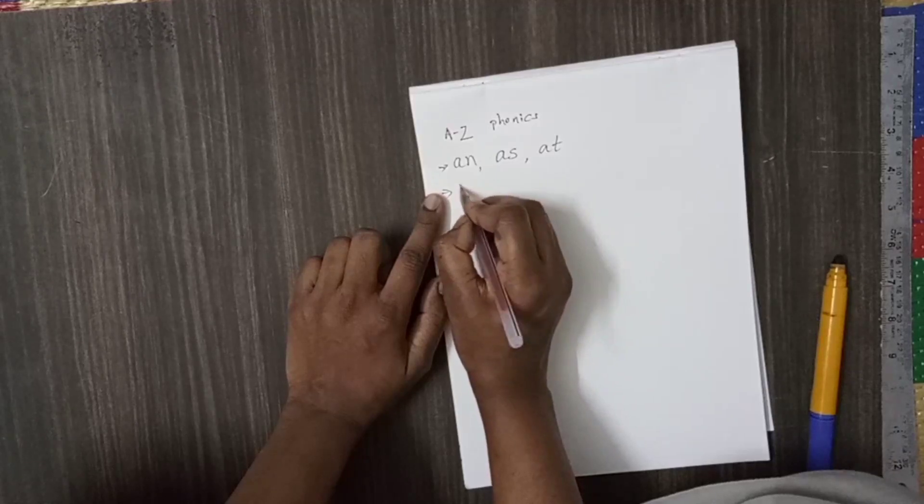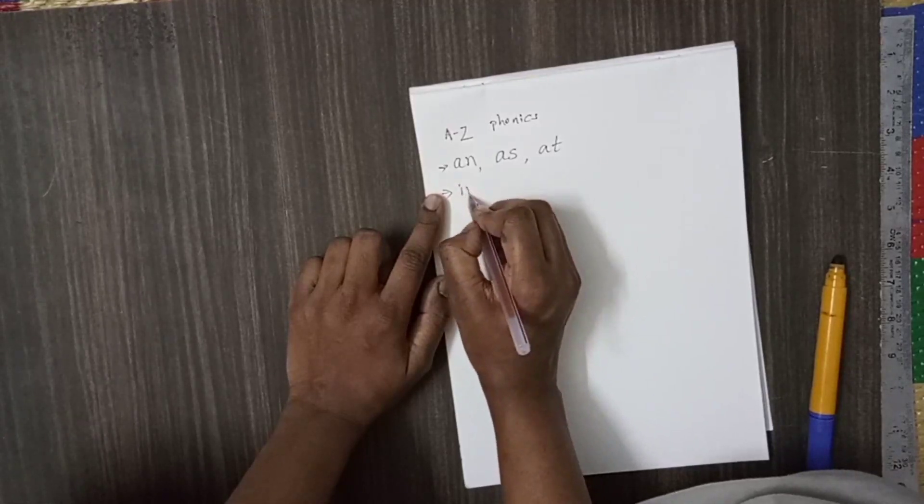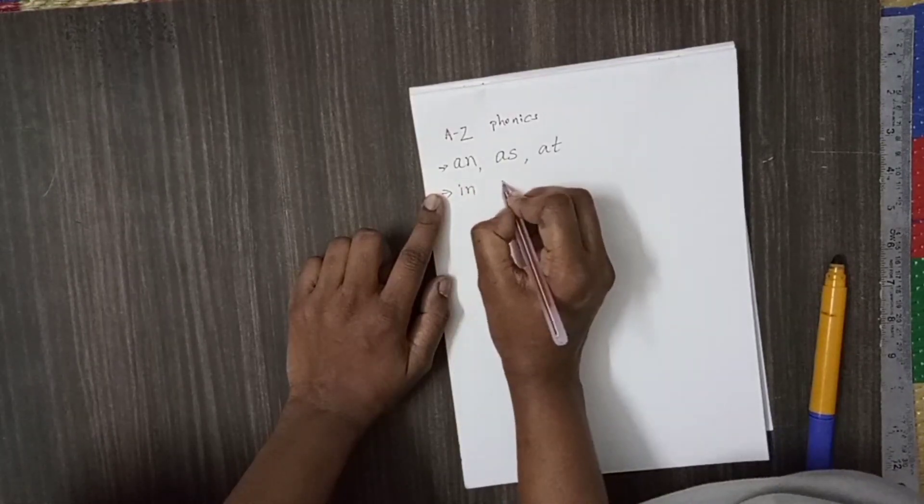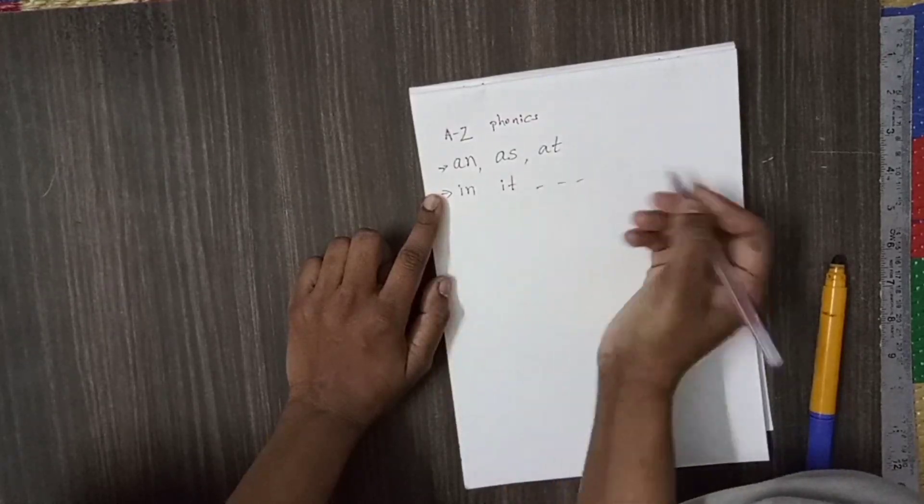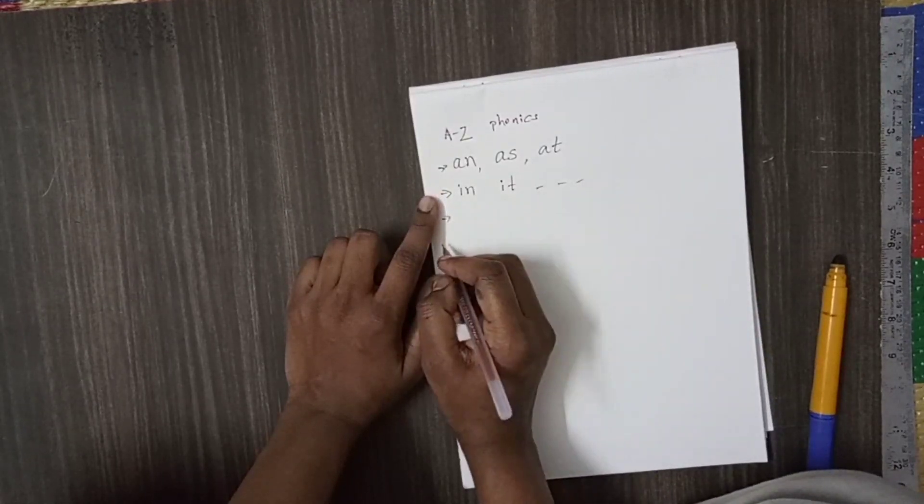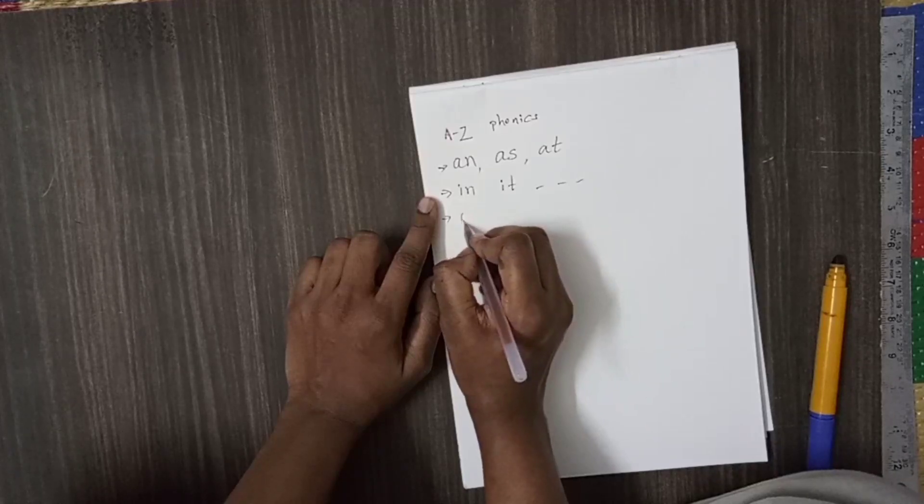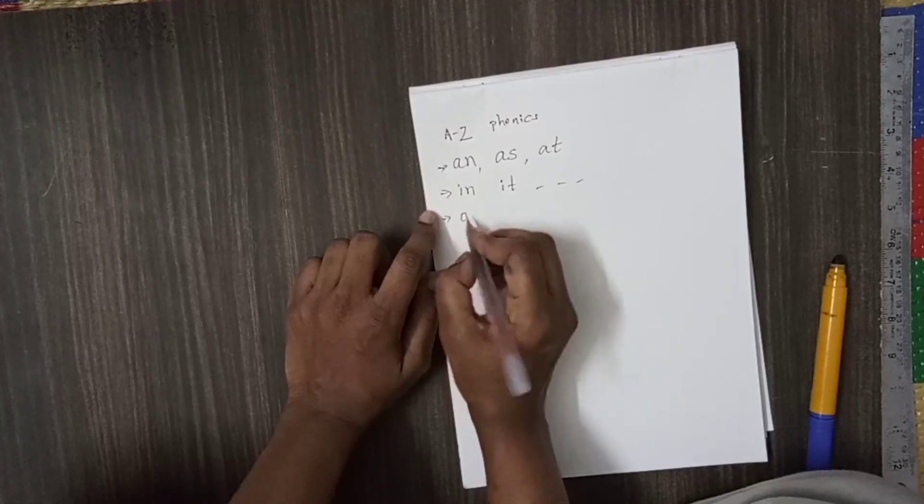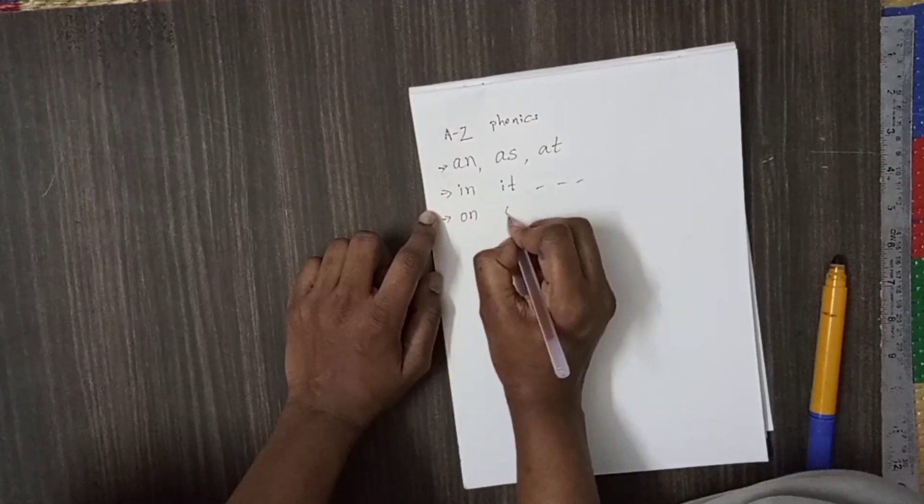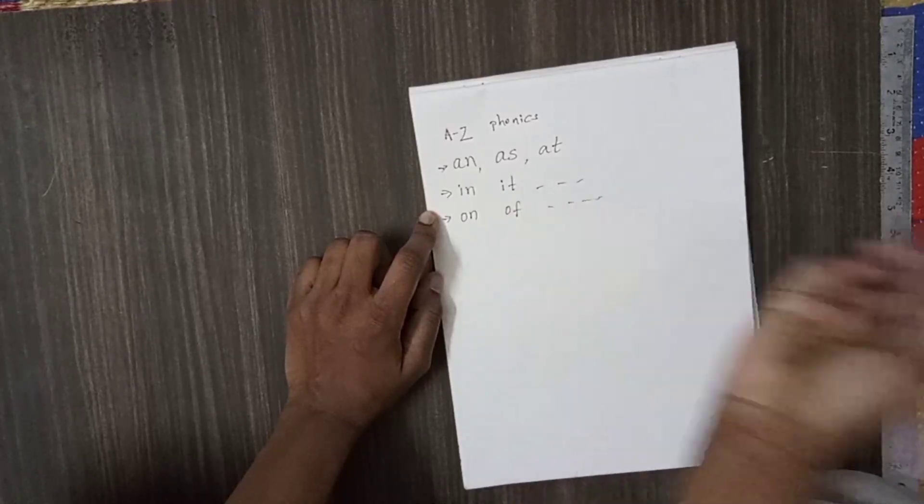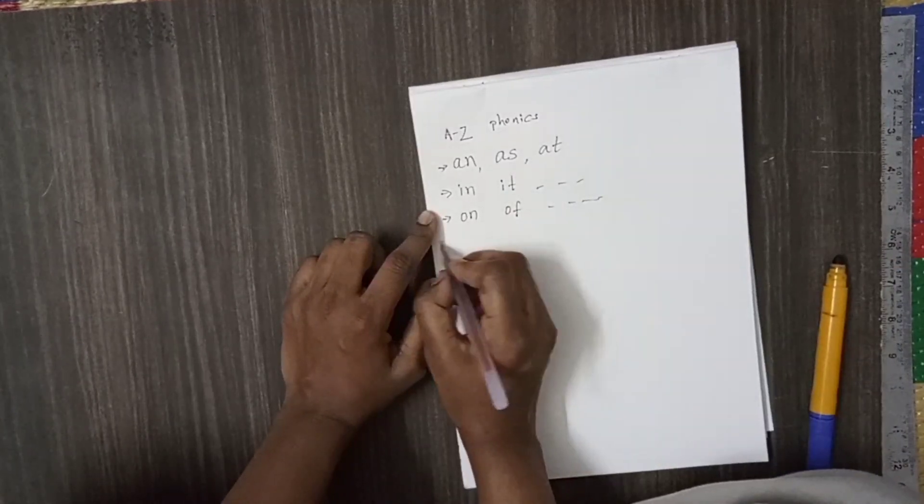Now with E sound. For example, E, N, IN, E, T, IT. Like this, so on. And next, they should know to read O sound. O makes a sound O. O, N, ON, O, F, OFF. Like this, they should know.